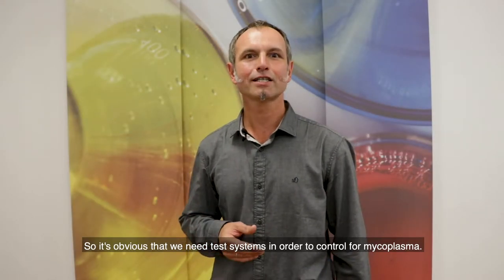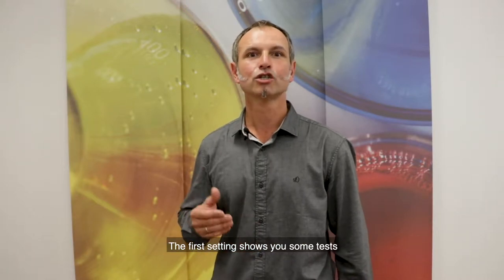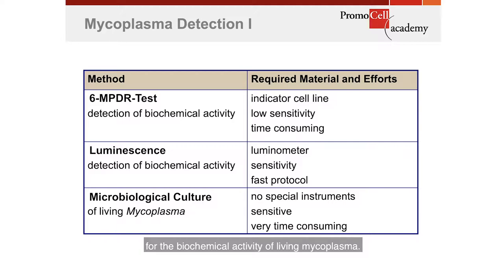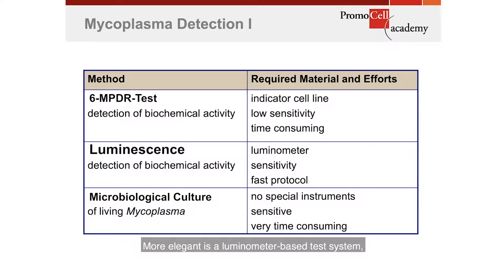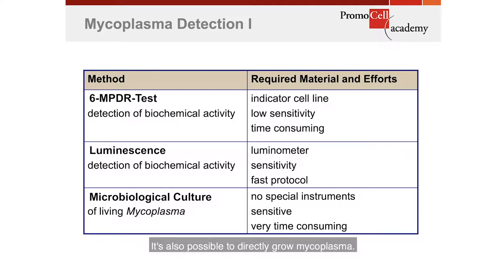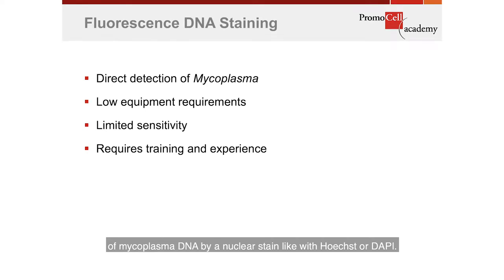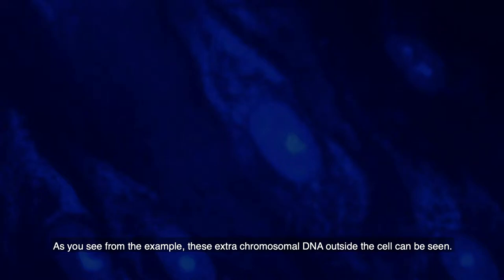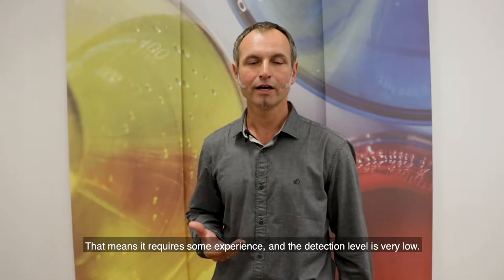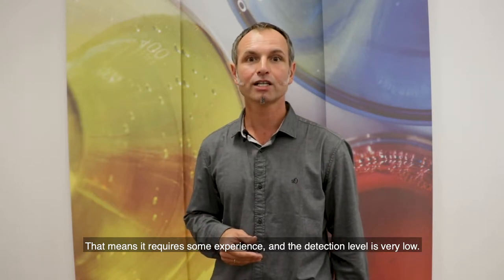It's obvious that we need test systems in order to control for mycoplasma. The first set shows tests for the biochemical activity of living mycoplasma. The MPDR test uses an indicator cell line and is very time consuming. More elegant is a luminometer-based test system, which also uses biochemical activity and is more sensitive. It's also possible to directly grow mycoplasma, however this is a very lengthy experiment. Another approach is direct detection of mycoplasma DNA by a nuclear stain like Hoechst or DAPI. As you can see from the example, this extra-chromosomal DNA outside the cell can be detected, however it is only very faintly visible, requiring some experience, and the detection level is very low.